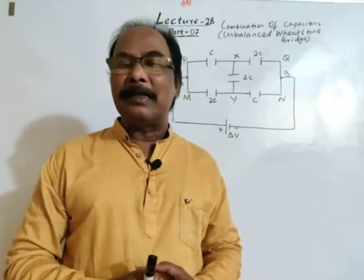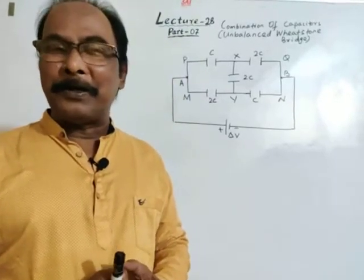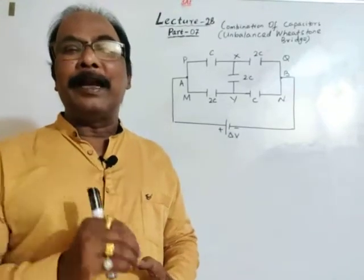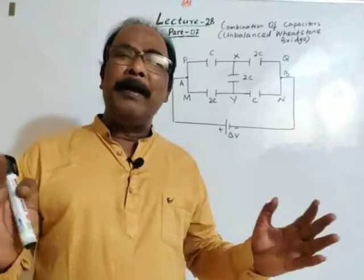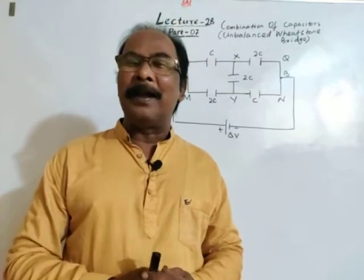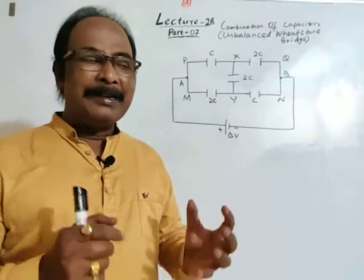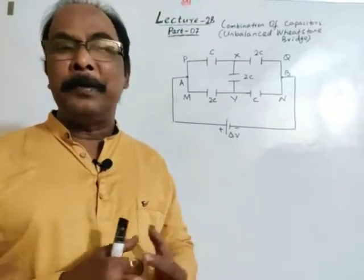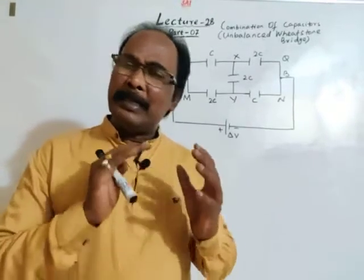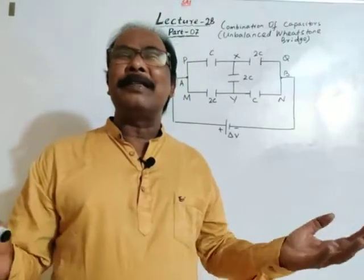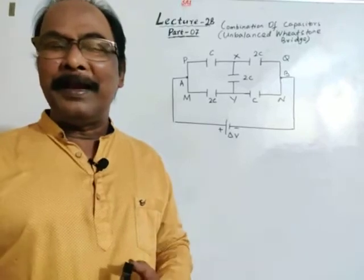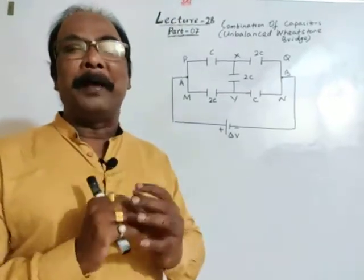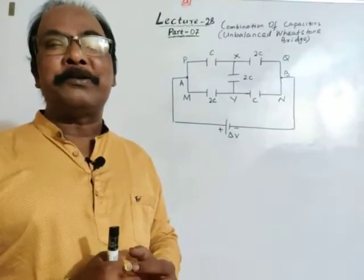In previous lectures we have discussed numericals and combination of capacitors. There are different concepts to solve for equivalent capacitance in case of combination of capacitors. I have divided the methods into several parts. In part 1 we discussed some fundamental numericals and different methods — how to use a connecting wire of zero resistance to find equivalent capacitance.